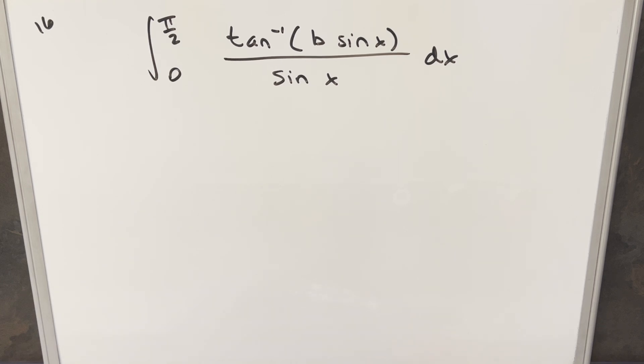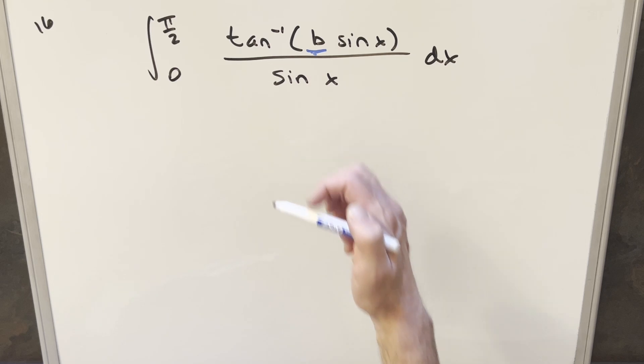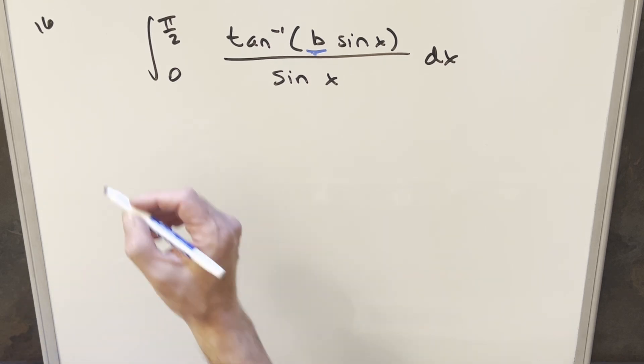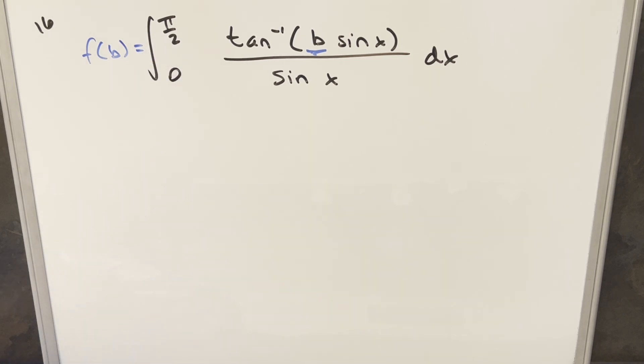Okay, this one was actually not too bad. They've really set it up for us where they've already created this second variable b. And what it's making me think is, let's just do Feynman's trick on this, but let's call this whole thing F of b.